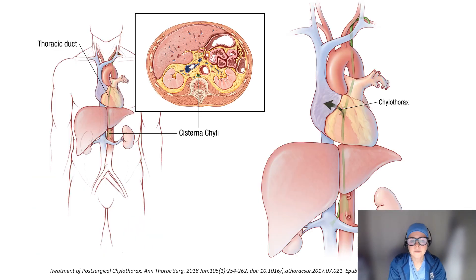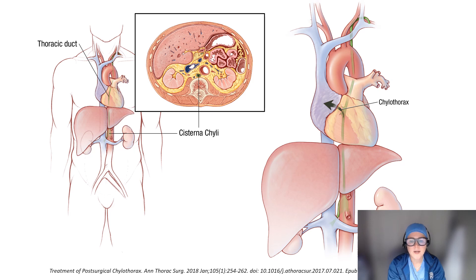The thoracic duct is the body's main lymphatic drainage system. It typically courses from the cisterna chylae, located in the abdomen, through the aortic diaphragmatic hiatus and posteriorly between the azygous vein and the aorta in the right chest. It crosses over to the left chest at the level of the fifth thoracic vertebral body and enters into the left subclavian vein. Anatomic variations are reported in almost 40 to 60 percent of patients.